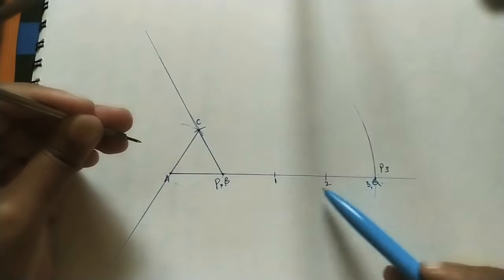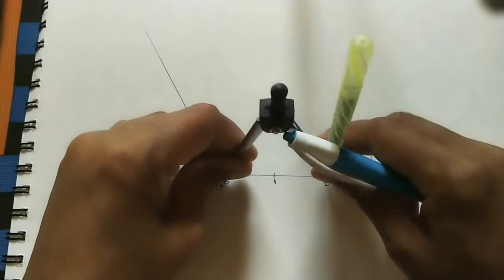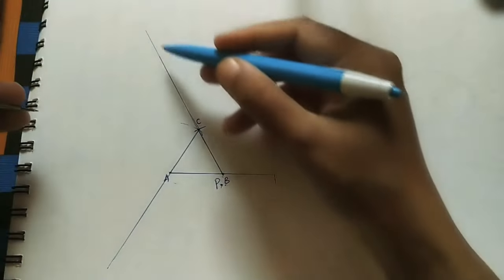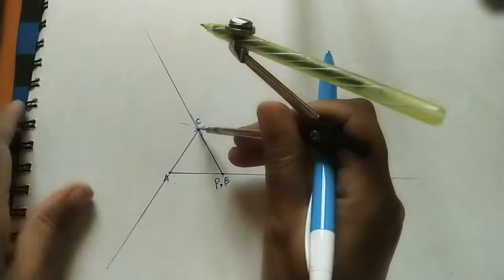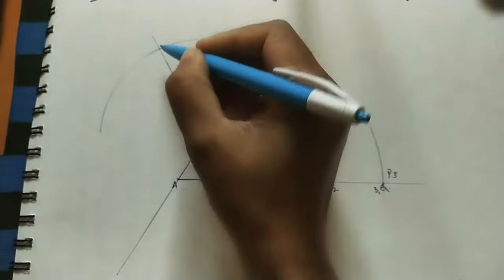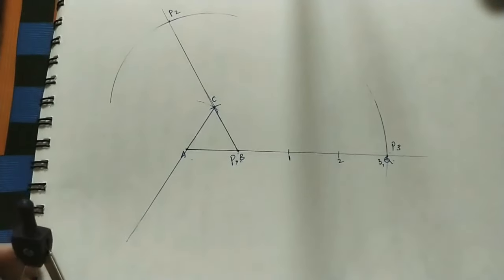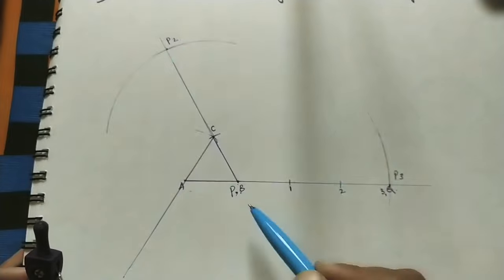After P3, take the P2 length. Mark on the second line with C as center. Take a slightly bigger arc. This intersection point is P2.